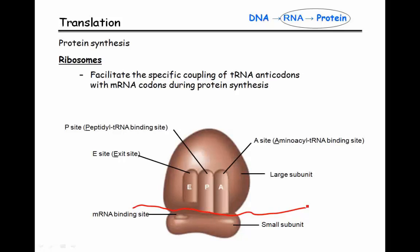We have the A site — the aminoacyl tRNA binding site — where any tRNAs bringing an amino acid come in. We have the P site — the peptidyl site — where we actually build the polypeptide. And then we have the E site — the exit site — where used tRNAs exit and go get another amino acid attached. Each active site is capable of accommodating three nucleotides of the mRNA molecule, which means one codon — three nucleotides fit in the A site, three in the P site, and three in the E site.